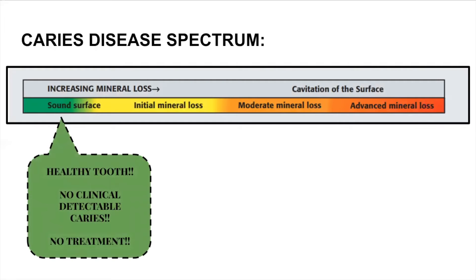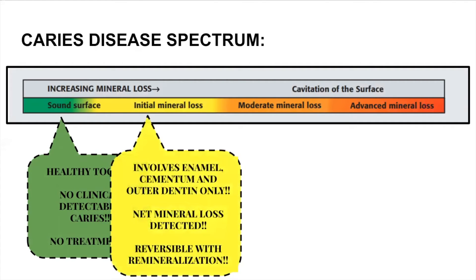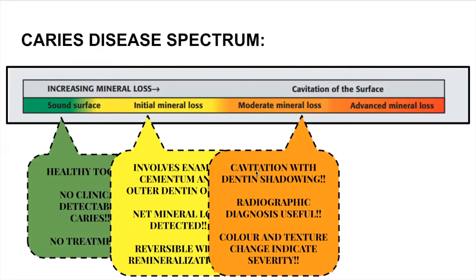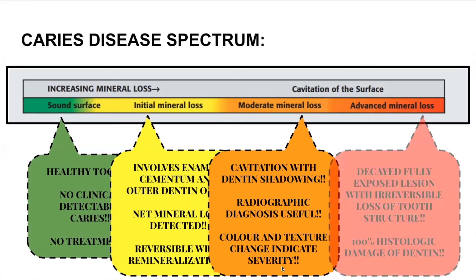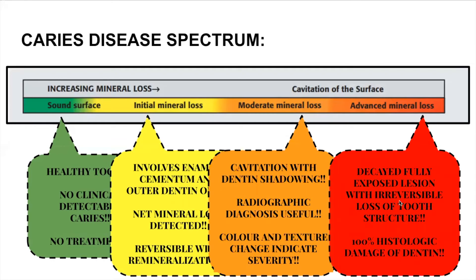Sound is a healthy tooth with no clinically detectable caries and no treatment needed. Initial mineral loss involves enamel, cementum, and outer dentin only — basically a net mineral loss where demineralization wins against remineralization. It is, however, reversible with remineralization. Moderate mineral loss is where cavitation with dentin shadowing — the yellowness and grayness underneath the enamel — is now seen. Radiographic diagnosis is useful for location and extent, and color and texture change will indicate severity. In advanced mineral loss, there is a decayed, fully exposed lesion with irreversible loss of tooth structure, 100% histologic damage of dentin, collapsed tooth structure with progressive dentin damage, and further caries progress.